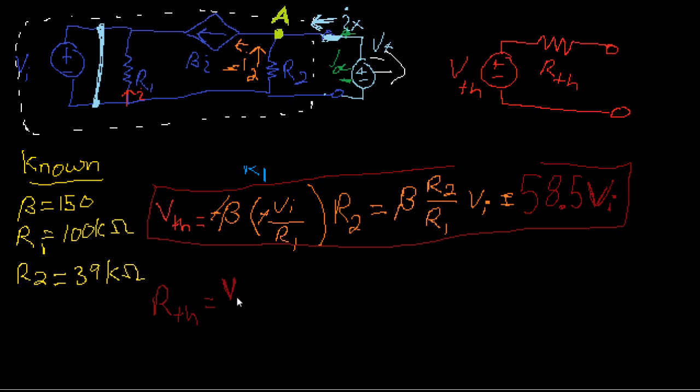That's going to give us our RTH. You're going to see that if we leave IX in terms of VX, the VXs will cancel, okay? So all we have to do is define I sub X.